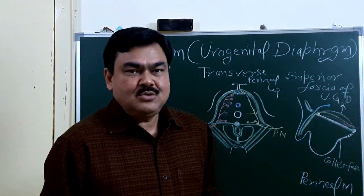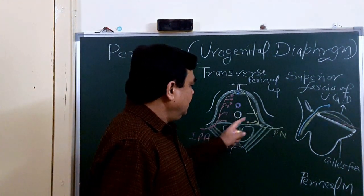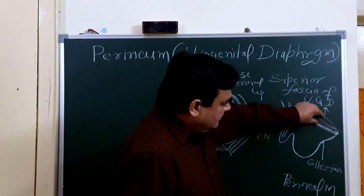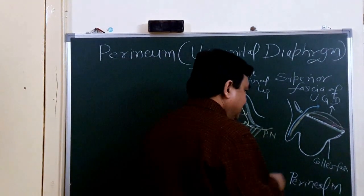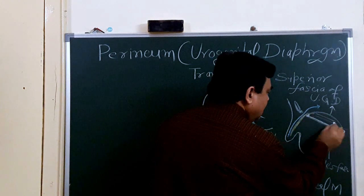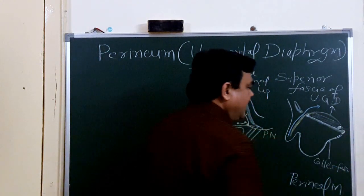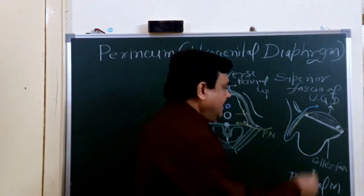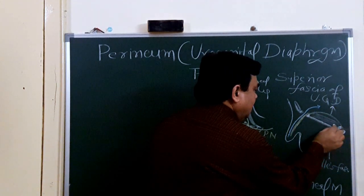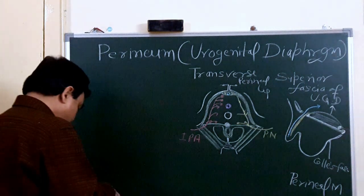Now we discuss the urogenital diaphragm. In the previous lecture you have seen the perineal membrane. In the space within the perineal membrane, two muscles are present: one is the deep transverse perineal muscle and the other is the sphincter urethra.